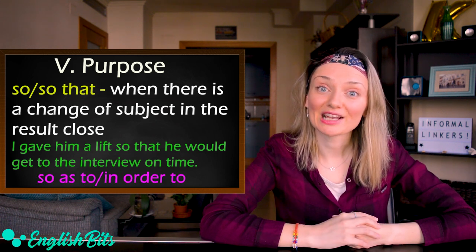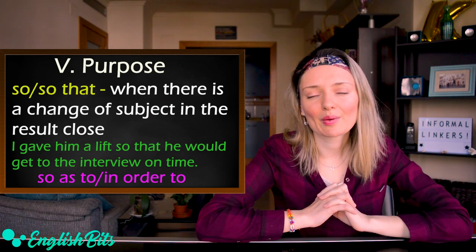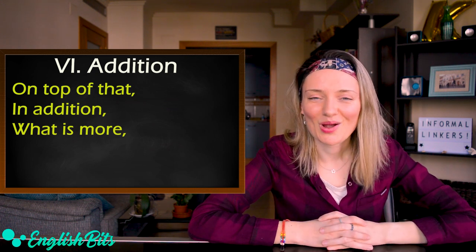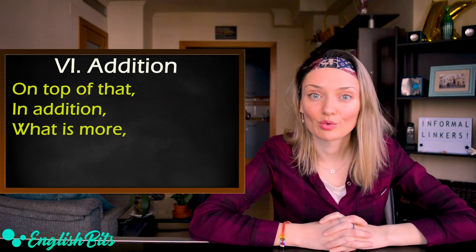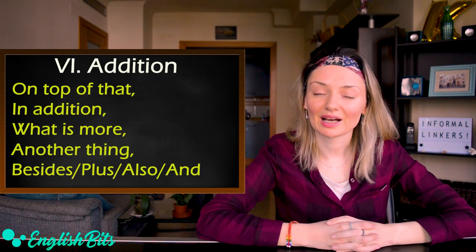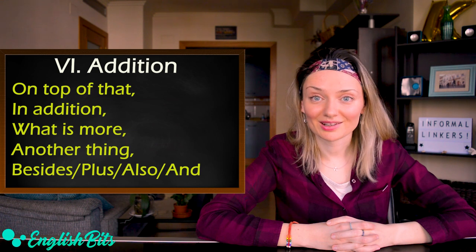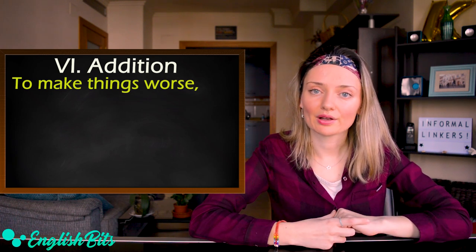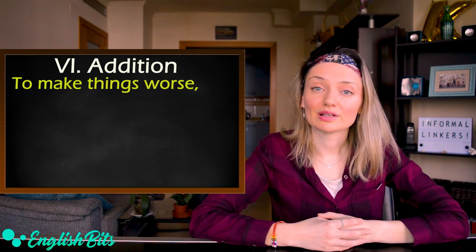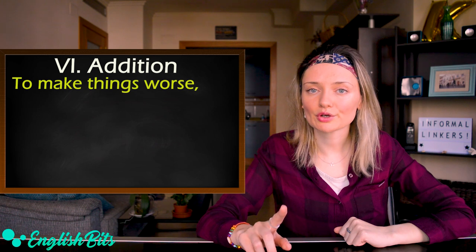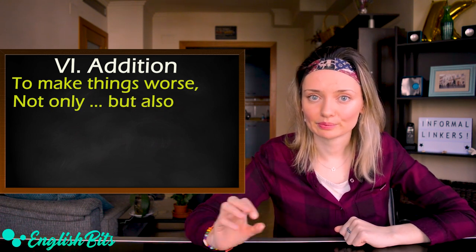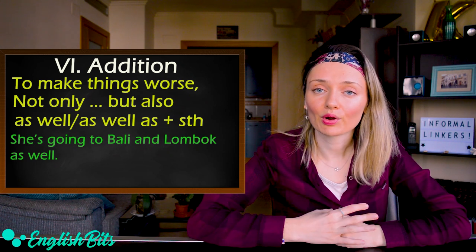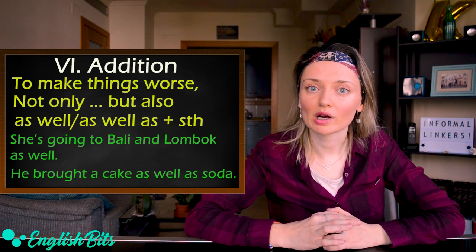Moving on to number six: addition. My favorite here is 'on top of that' — it sounds really good. We can also say 'in addition,' 'what's more,' 'another thing,' 'besides,' 'plus,' 'also,' and 'and.' Another linker you can use is 'to make things worse' — for example, if you're complaining about different problems. You can also use inversion: 'not only... but also.' And we can use 'as well' or 'as well as something' — for example: she's going to Bali and Lombok as well; or he brought a cake as well as soda.